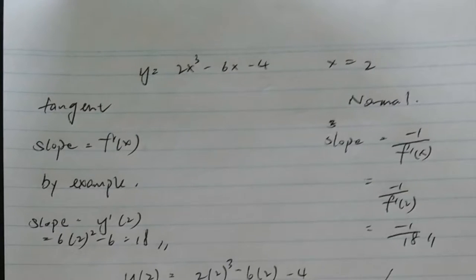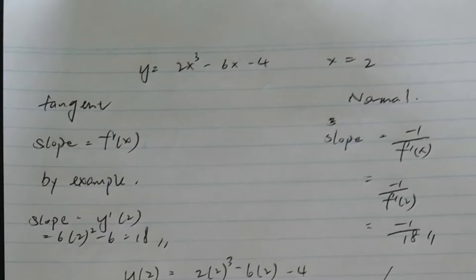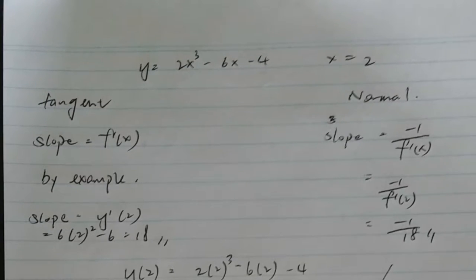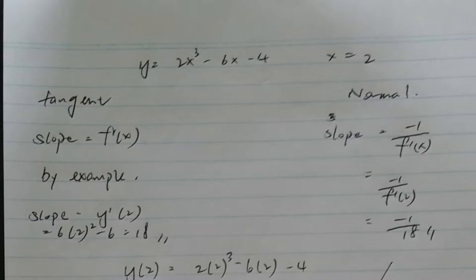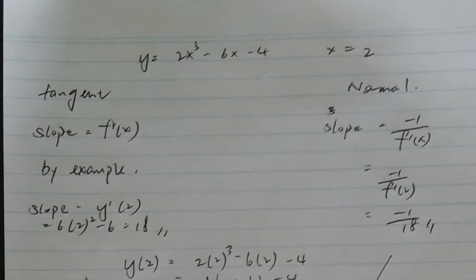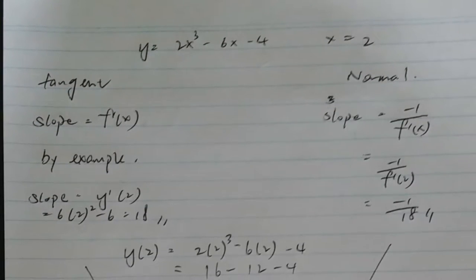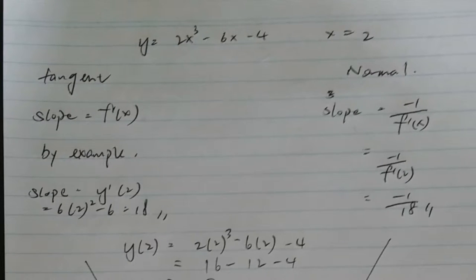Now I will introduce what is tangent and normal and how to find out the formula of it. The tangent, the slope of tangent is f dash x. For example, x equals to 2 and we sub it into f dash x. y dash 2 equals to 18. This is the slope of tangent.